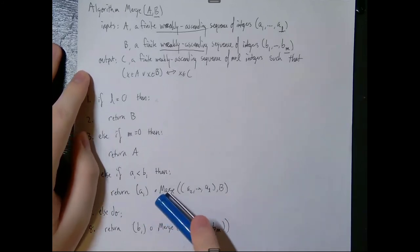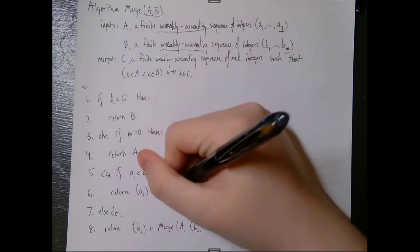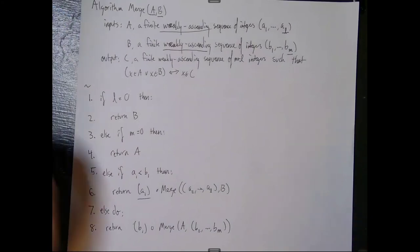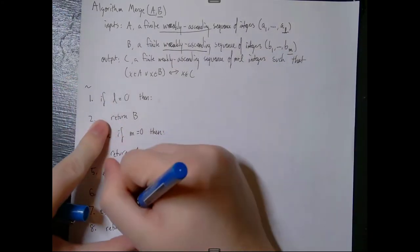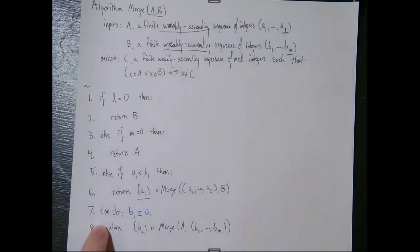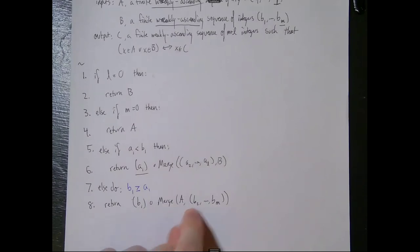There's a function composition operator used here — it's a little bit of an abuse of notation — but it's the most accurate we can really get. We're just sticking one sequence on at the end of another sequence. Otherwise, when b sub 1 is greater than or equal to a sub 1, we take b sub 1, stick it at the front of the sequence, and then recurse on a and b sub 2 through b sub m. So that is our merge algorithm.